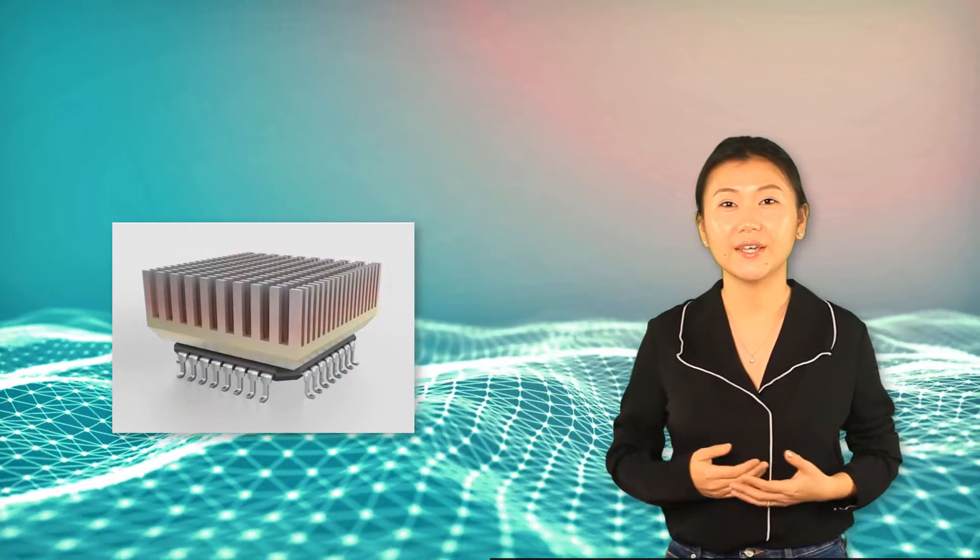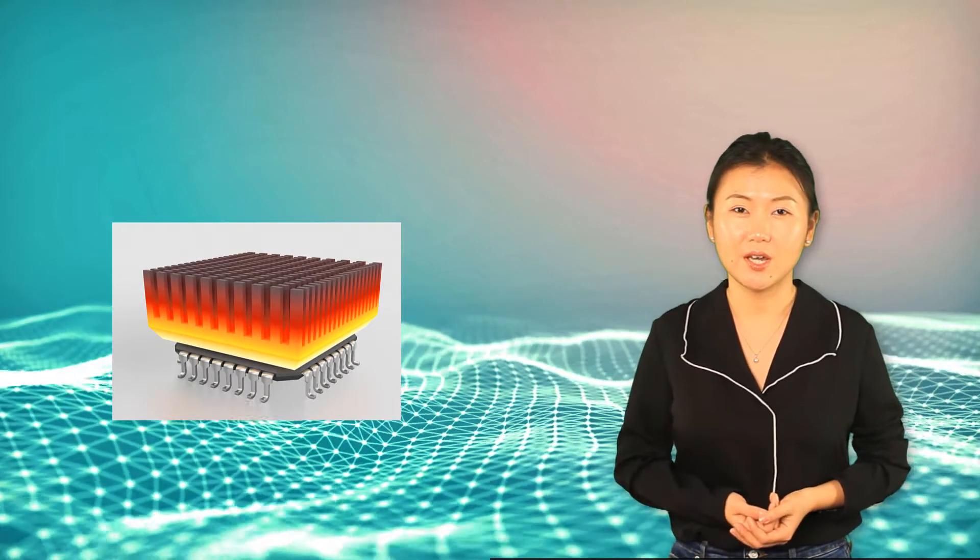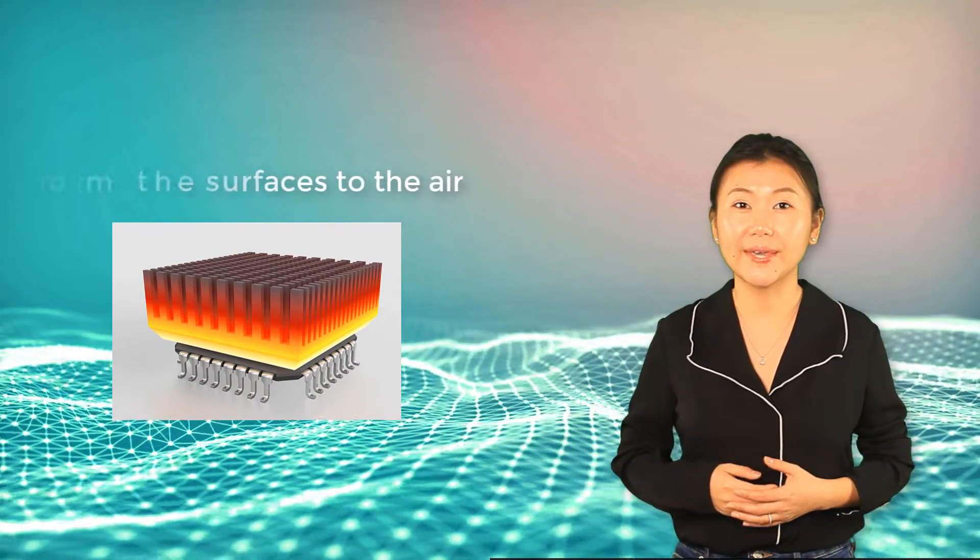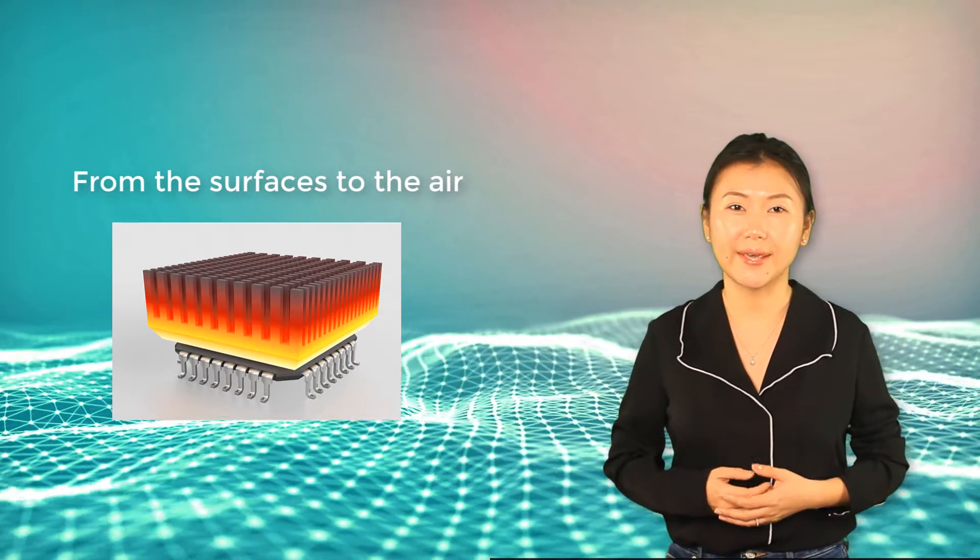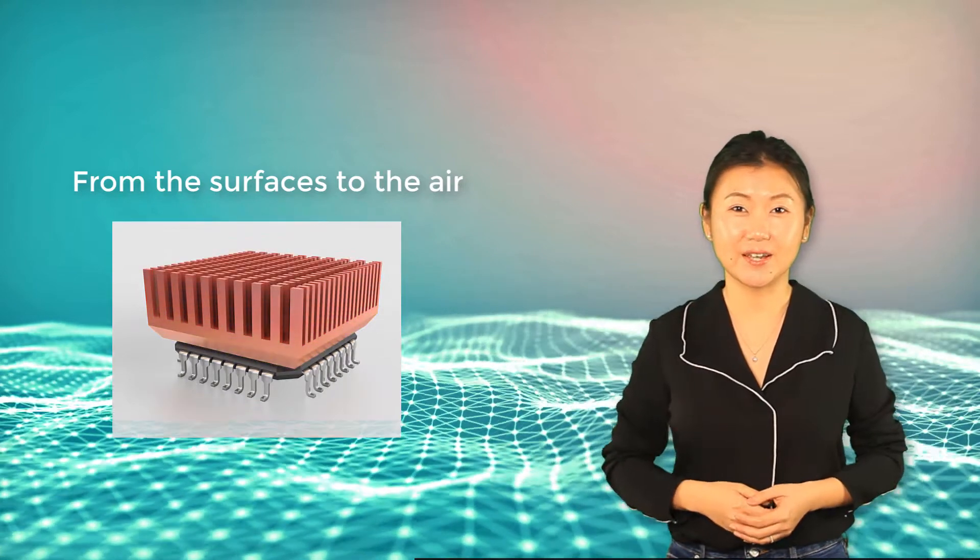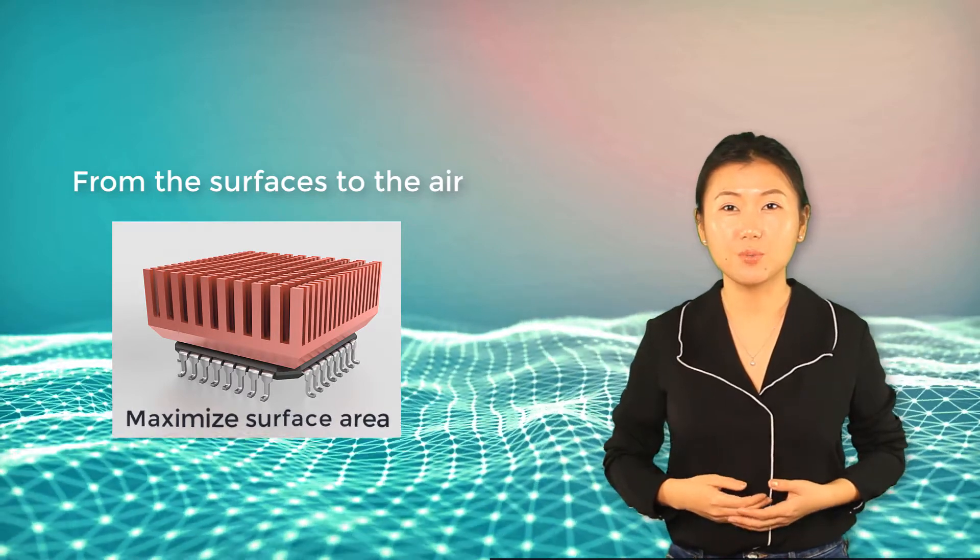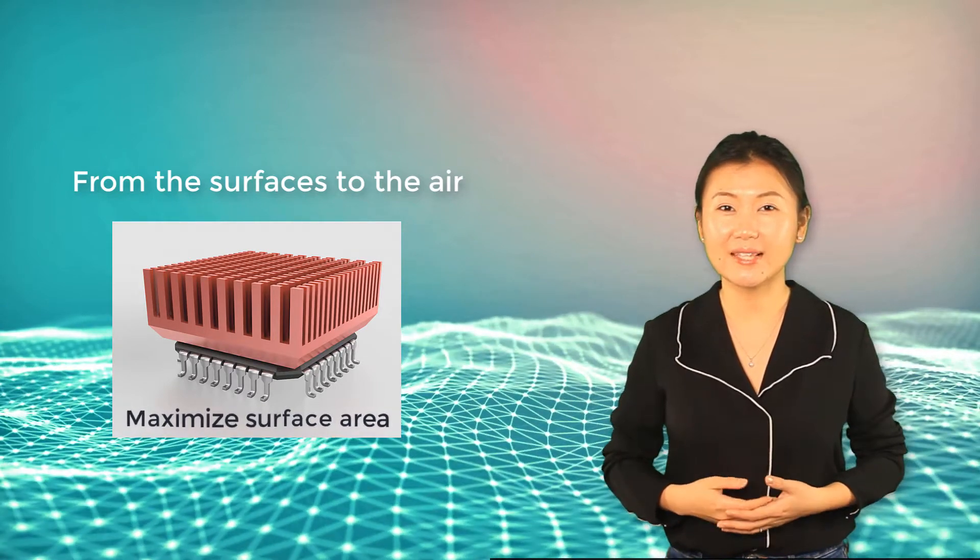Coming back to the heat sink, the heat sink itself is expected to have high temperature when the CPU is functioning. Convection occurs from the heat sink surface to the surrounding air. This actually explains why a heat sink is designed with such geometry: it is to maximize the surface area to remove as much heat by convection as possible.